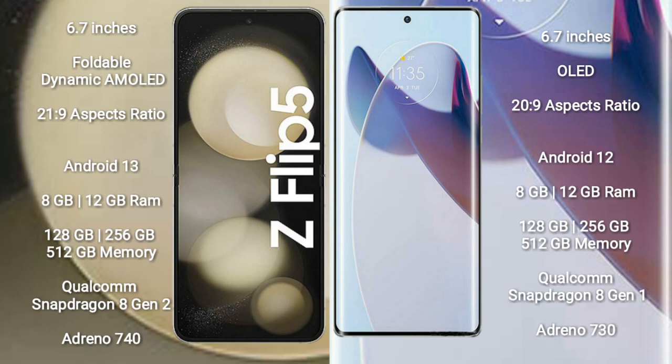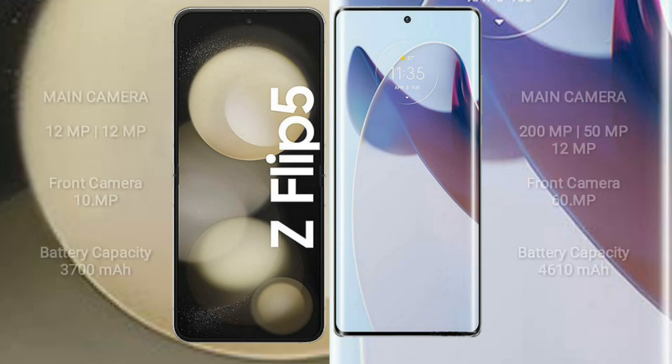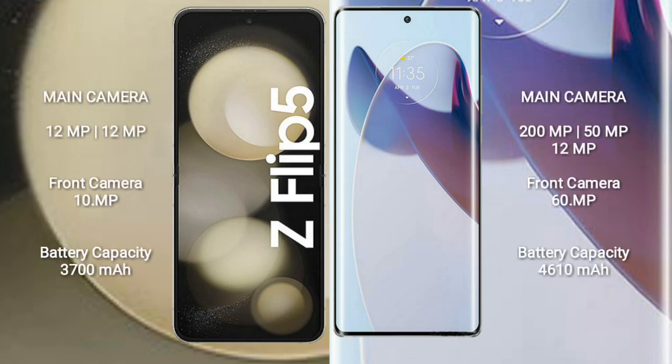Motorola Moto X30 Pro comes with 8GB or 12GB RAM and 128GB to 256GB or 512GB internal storage, with a Qualcomm Snapdragon 8 Gen 1 processor and GPU Adreno 730.